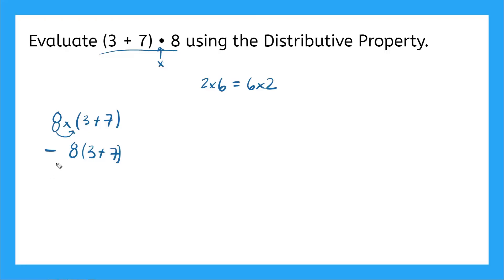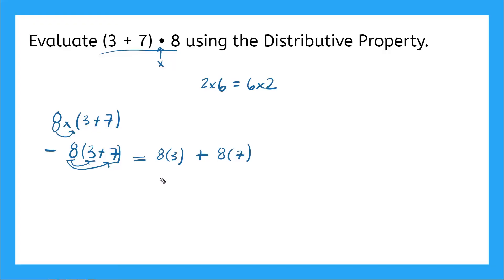Now using the distributive property, we're going to distribute what's outside of the parentheses to what's inside. So I'll have 8 times 3 and 8 times 7, and I leave my addition sign right in the middle. So this is going to look like 8 times 3 plus 8 times 7. And now I can do my multiplication: 8 times 3 gives me 24, plus 8 times 7 gives me 56. And if I do my addition, 24 plus 56 gives me 80. And that's our solution.